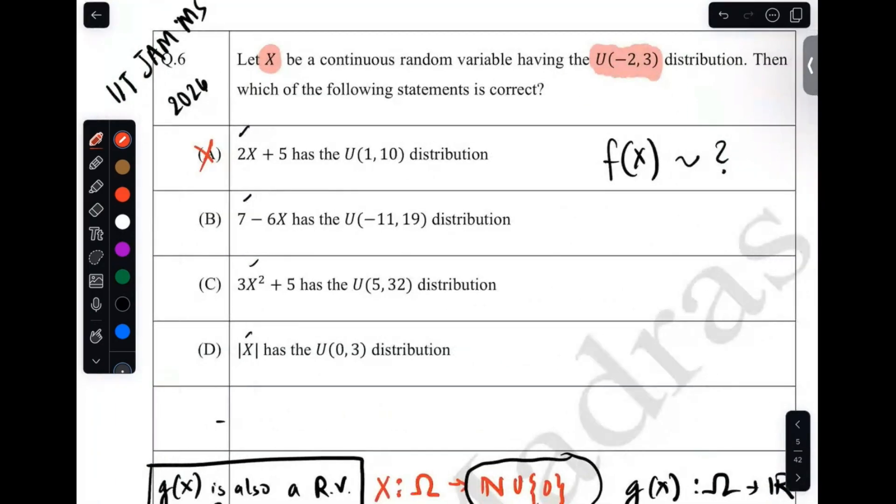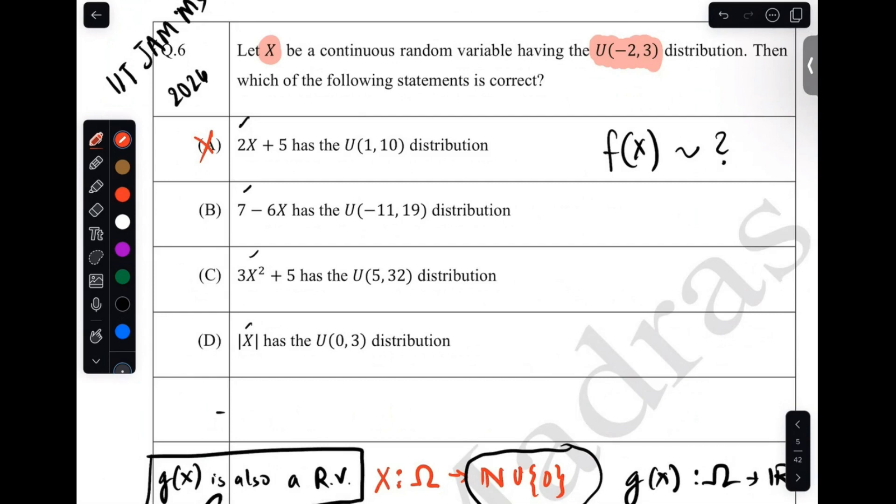You understand in any linear function, you can prove any linear function will always, the output will be a uniform distribution. You just have to remember the support. You have to understand to calculate the support first. How to calculate the support now? It's simple. 7 minus 6x has uniform minus 11 comma 19. So what can you do here? You can do like minus 2 comma 3. Where does this go under this function? 7 minus 6 times minus 2, and this must go 7 minus 6 times 3. So this turns out to be minus 11 and this turns out to be 19.